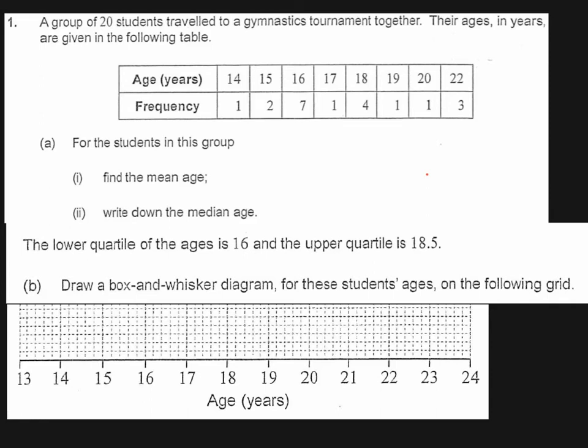Question 1 starts off with a fairly straightforward task which basically just involves using your calculator. We've been given this information here about the students who travelled to a gymnastics tournament together. We've got their ages and we've counted the number of students with each age.